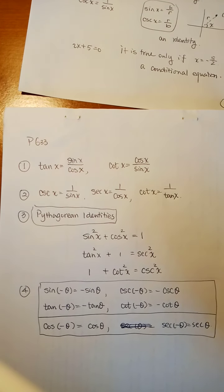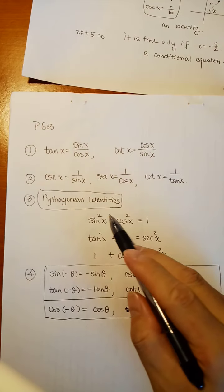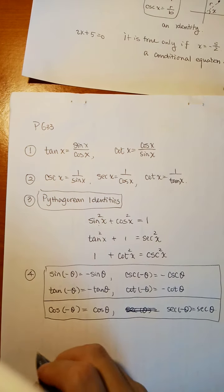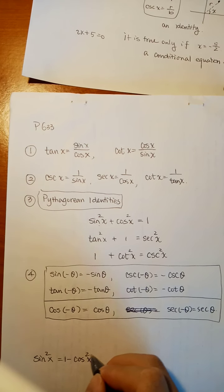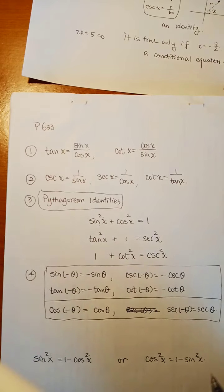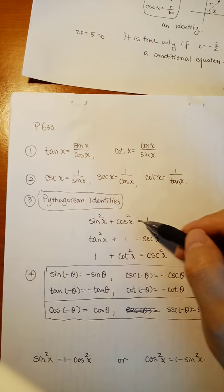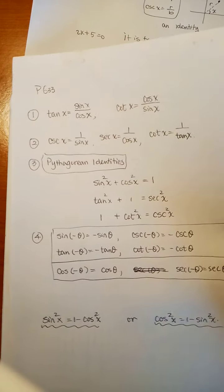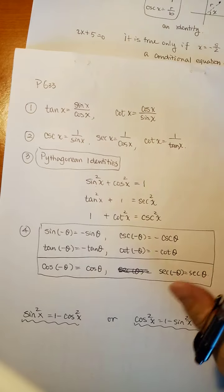These are the basic identities you must keep in mind. From the Pythagorean identity sin²x + cos²x = 1, we can also write sin²x = 1 - cos²x, or cos²x = 1 - sin²x. These are variations of the Pythagorean identity that you can use directly. Similar variations exist for the tangent/secant and cotangent/cosecant identities. The rest of section 8.4 is about applying all these properties.